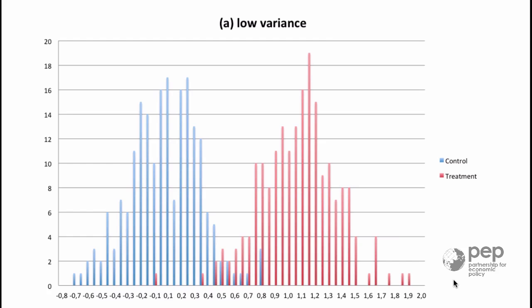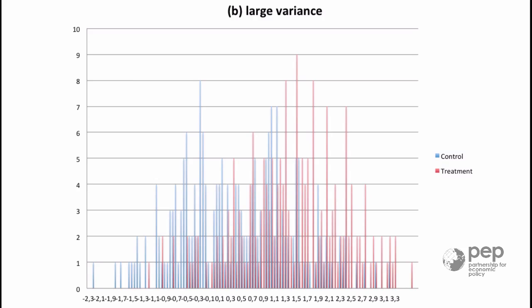If instead I observe these data I'm not so sure about my conclusion. The difference in mean between treatment and control is the same, zero and one. But is this difference a random event? Maybe, maybe not. Here we still have 200 observations on each group.